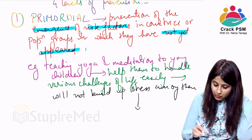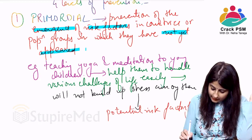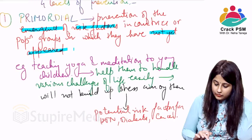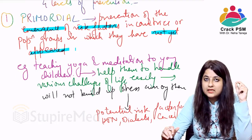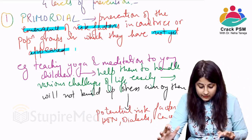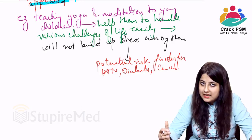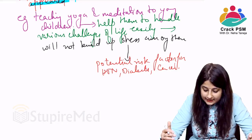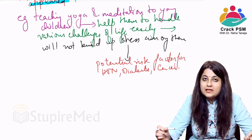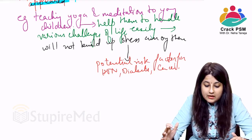This stress is a potential risk factor for hypertension, diabetes, CVDs, and cancers. So primordial prevention aims at preventing the emergence of risk factors in populations or countries in which they have not yet appeared. Teaching yoga and meditation to young children helps them manage challenges, prevents stress from building up, and thereby reduces one of the important risk factors for hypertension, diabetes, and cancers.